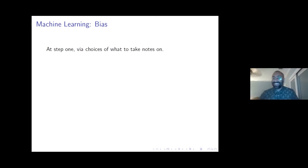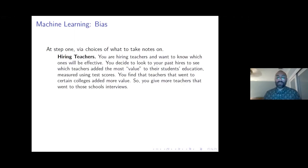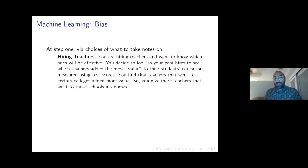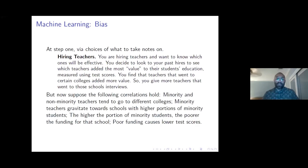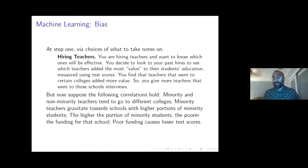At step one, bias can enter via choices of what to take notes on. Here's an example called hiring teachers: you're hiring teachers and want to know which will be effective. You look at past hires and measure value added using test scores. You find teachers from certain colleges added more value. But suppose minority and non-minority teachers tend to go to different colleges, minority teachers gravitate toward schools with higher portions of minority students, poorer funding causes lower test scores — and now from the outset you've set up an unfair scoring system.